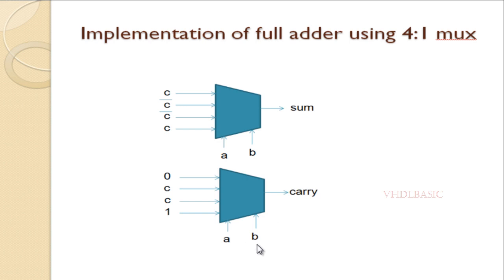I am connecting a and b to the select line. If both inputs are 0, then irrespective of c, carry will be assigned as 0. If both bits are 1, irrespective of c, carry will be assigned as 1. If any one of the bits is 0, then c will be assigned to carry.